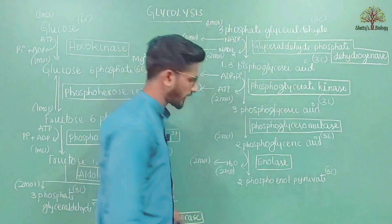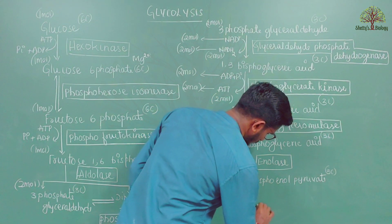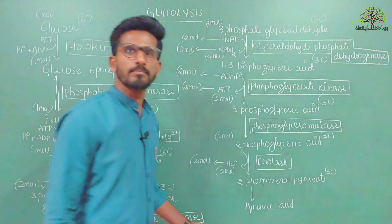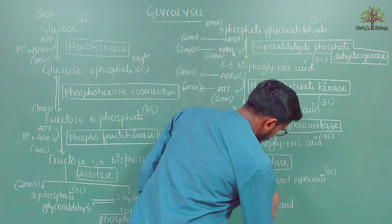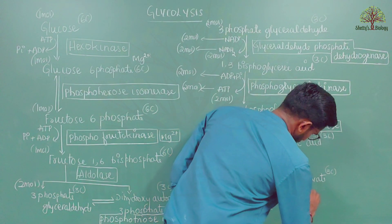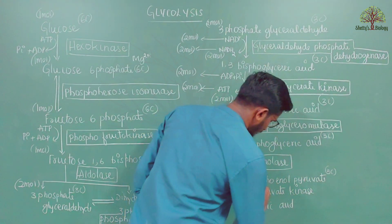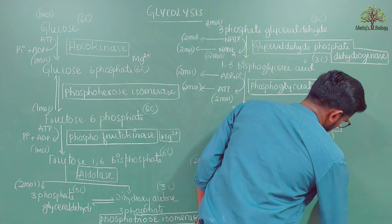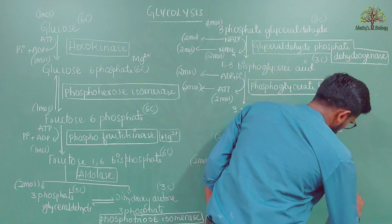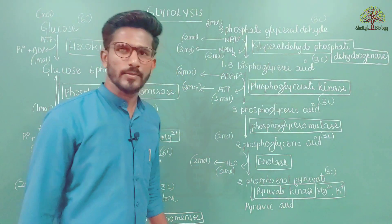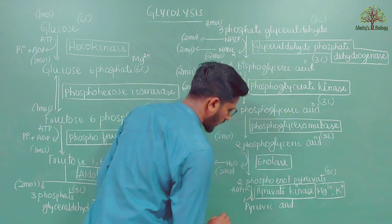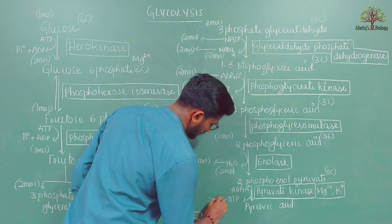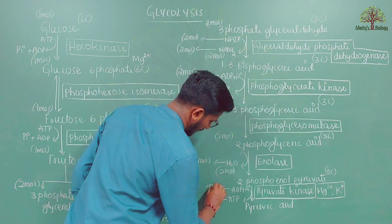Finally, 2-phosphoenolpyruvate is converted into pyruvate acid by the enzyme pyruvate kinase, along with the mineral magnesium 2+ and K⁺. In this process, 2 molecules of ATP are produced.